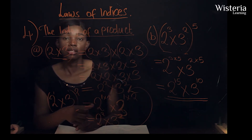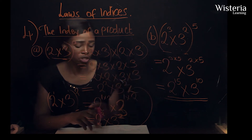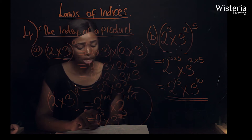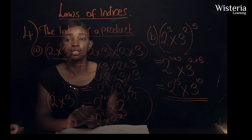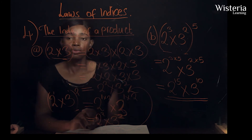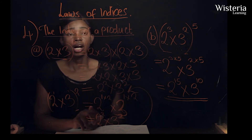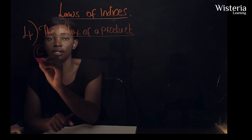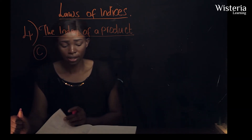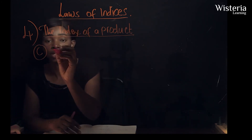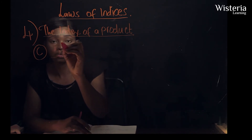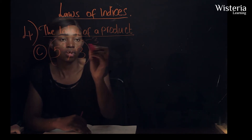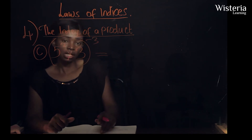This has been simplified using the law of indices which states the index of a product — we just multiply the powers. I'll give one more example on the index of a product so we can also work with indices with a negative power. We can look at five to the power negative three times three, raised to the power three.